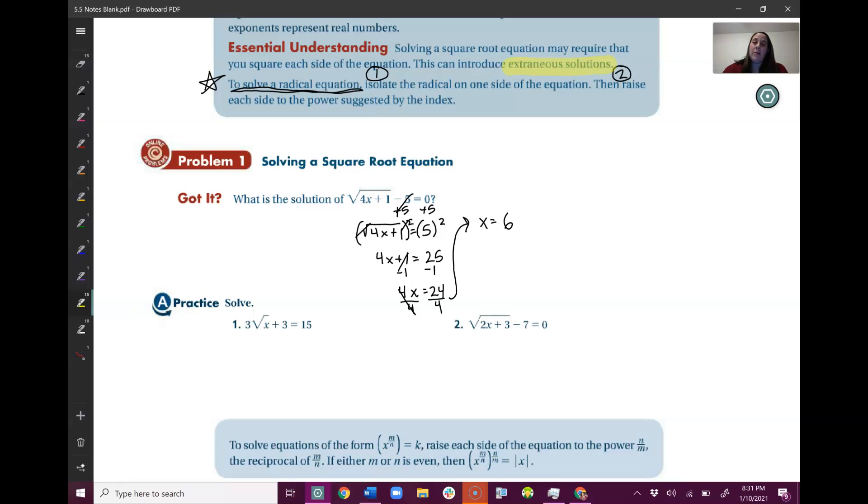So I need to double check that this isn't a fake answer by plugging it back into the original equation and making sure it works. So I'm going to do that. I'm going to plug x equals 6 into this equation and make sure it works. So I've got square root of 4x, so 4 times 6, because I'm plugging 6 in.